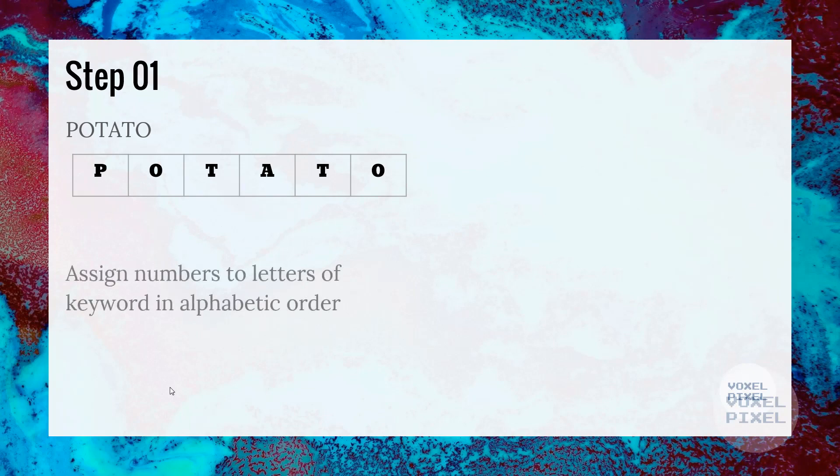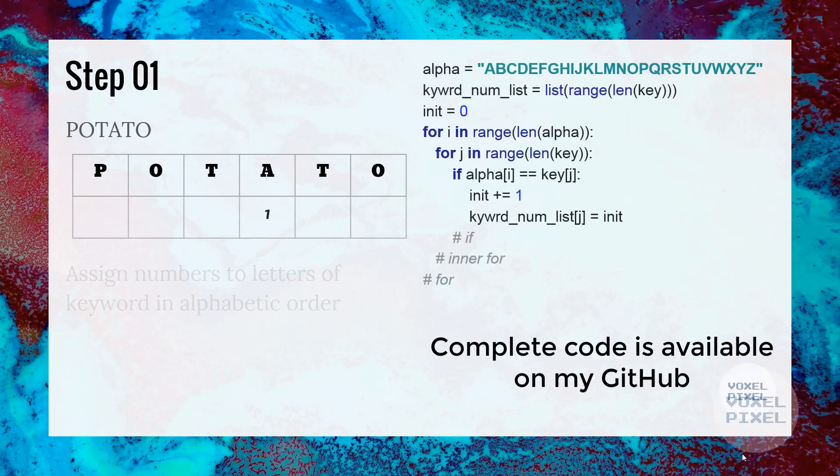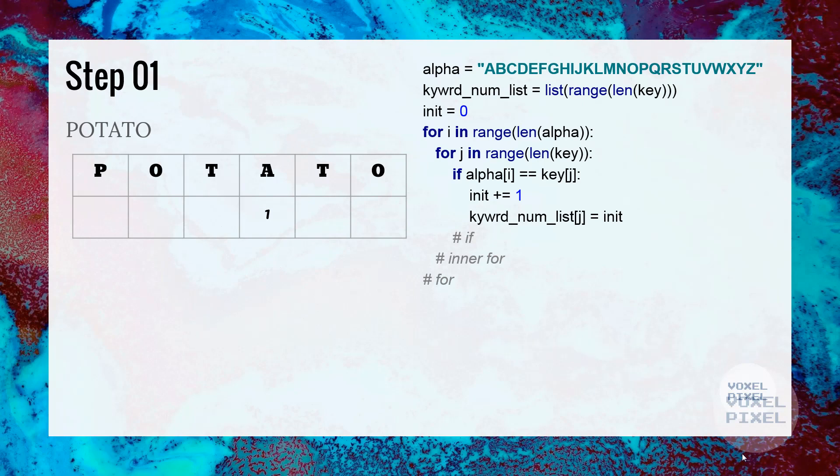Next, we assign numbers to letters of keyword in alphabetic order. Number assignment can be achieved by this code. Since A is the first letter in the alphabet, we will assign it number one. Looking at the keyword, we can see that letter O appears twice, so we will assign it numbers from left to right. First occurrence of O will be given number 2 and second will be given number 3. P will be assigned number 4, first T will be assigned number 5 and second T will be assigned number 6.